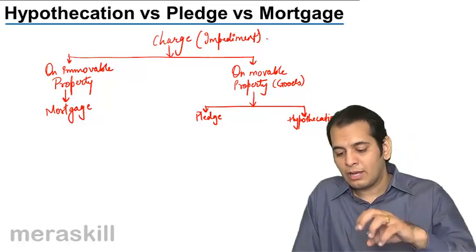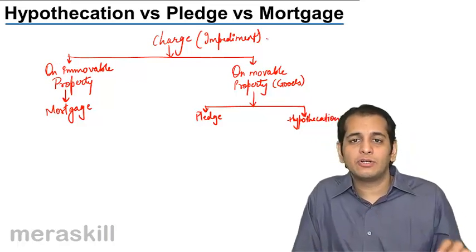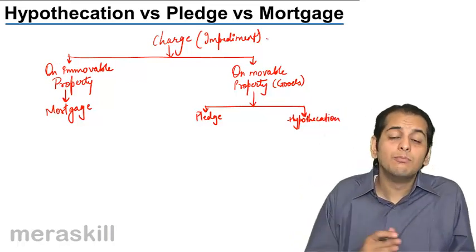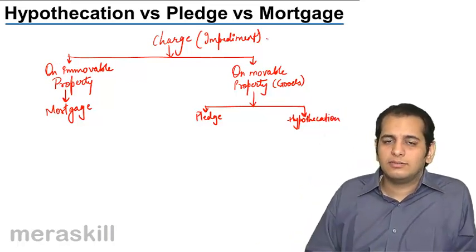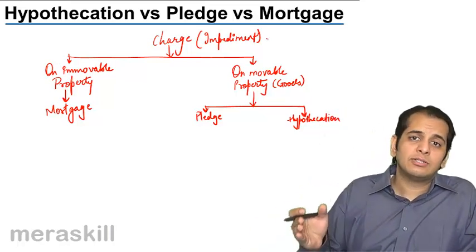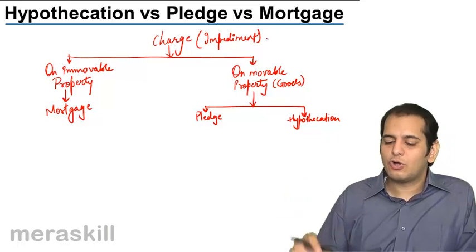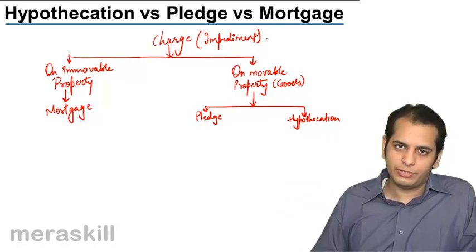On movable properties — goods which are movable — the charge that is created is called either pledge or hypothecation.